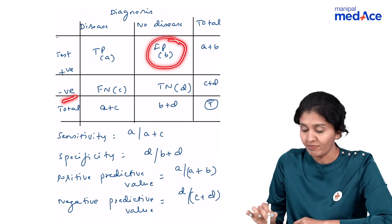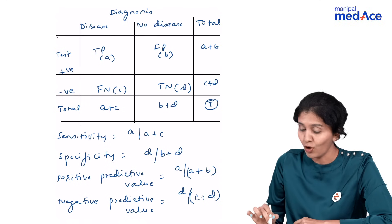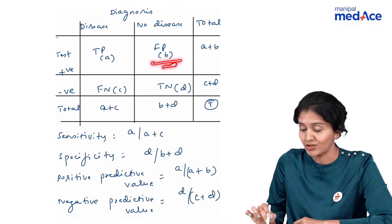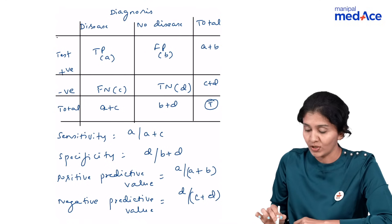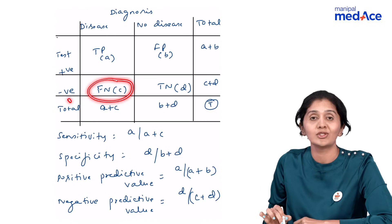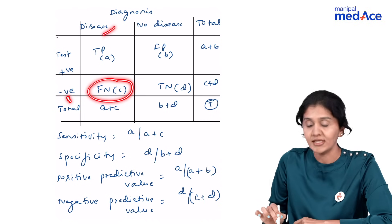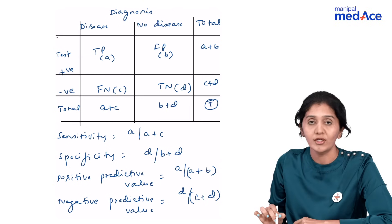What is FP? FP is when the screening test is falsely giving positive results, but actually there is no disease. And what is FN? The screening test has shown negative result, but actually there is disease. That is why it is called falsely negative.